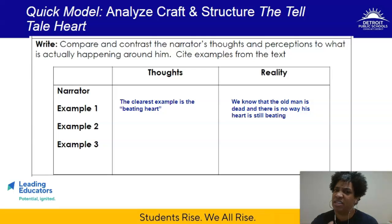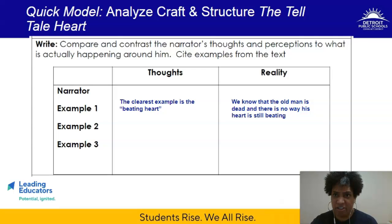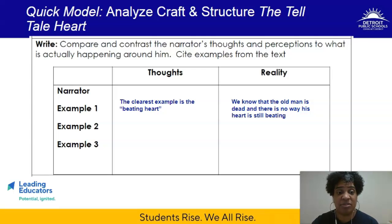Can someone's heartbeat really be that loud? That's a good question. After the old man has already been killed, his heart is no longer beating — he's not living. We clearly know that. But we also know that the narrator still thinks he hears it. So the narrator's thought is: I think I hear the beating heart. Reality? He can't be. That's a really clear, obvious example. I want you to find a couple more examples in the text where that disparity — that discrepancy between perception and reality — is happening.